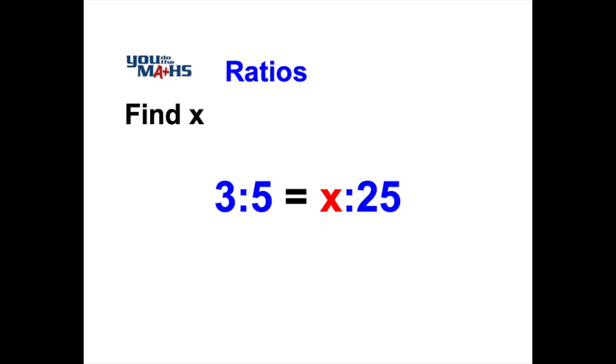The way we go about solving it is to treat the ratios like fractions. So the first ratio is expressed as 3 over 5 and the second ratio as x over 25.